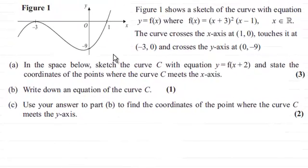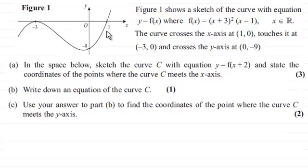Hi there. With this question we're given a sketch of a curve with equation y equals f of x, where f of x equals x plus 3 all squared multiplied by x minus 1. The curve crosses the x-axis at the point (1, 0), touches it at (−3, 0), and crosses the y-axis at (0, −9). For the first part we have to sketch the curve c with equation y equals f of x plus 2 and state the coordinates of the points where curve c meets the x-axis.